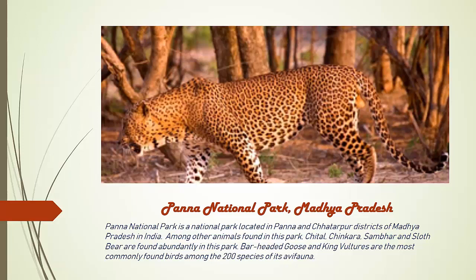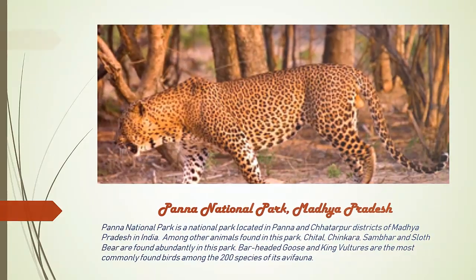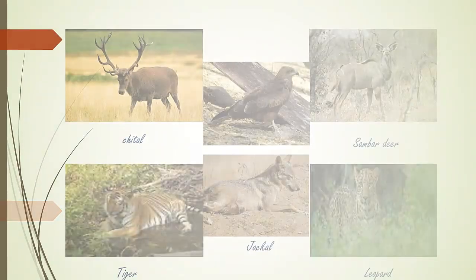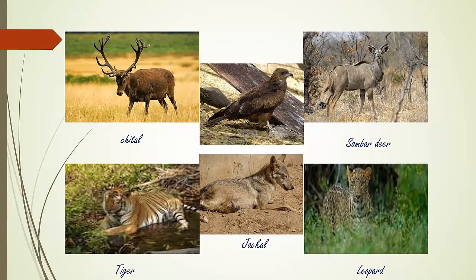Panna National Park from Madhya Pradesh is located in Panna and Chhatarpur districts of Madhya Pradesh. It is commonly known for over 200 bird species, so the park is also called a hub of Avifauna. Examples of wildlife include Cheetah, Sambar, Tiger, Jackal, and Leopard.